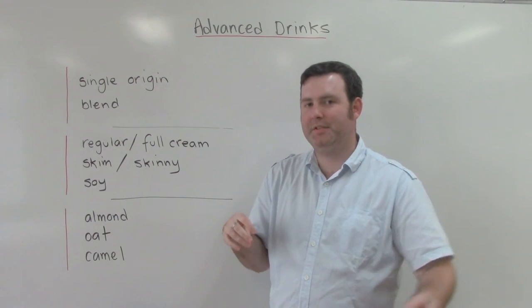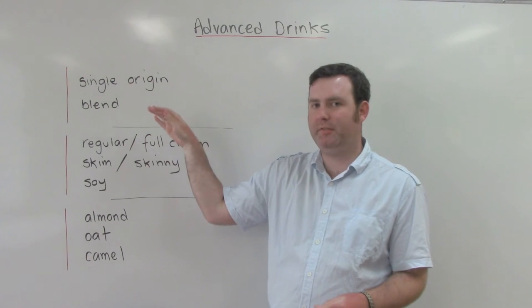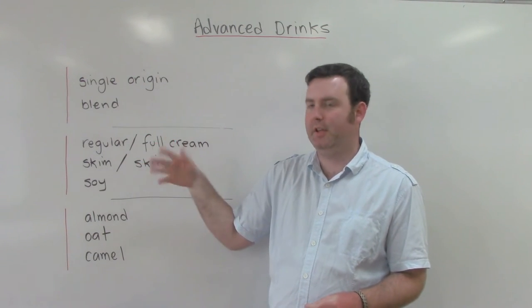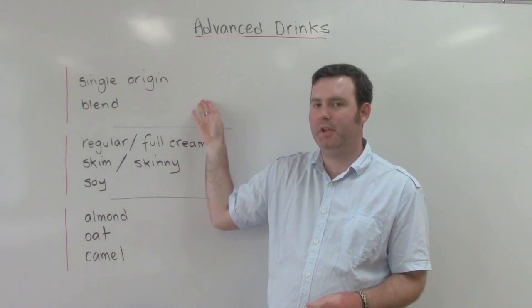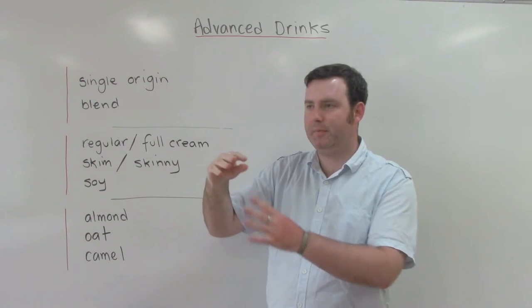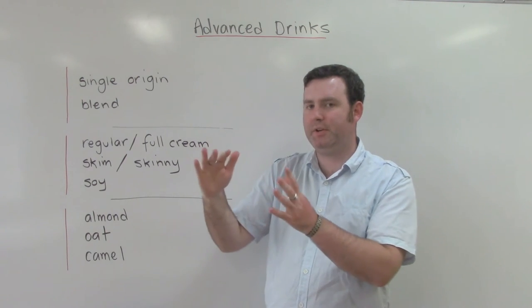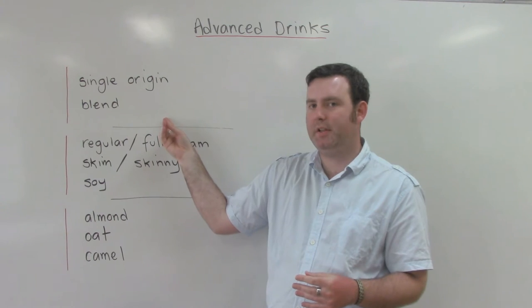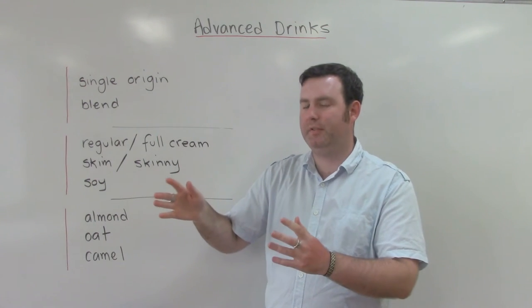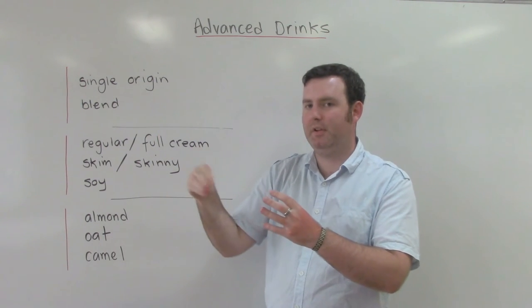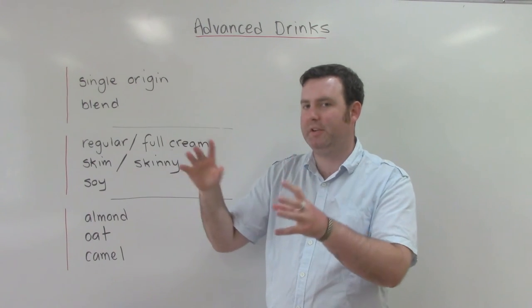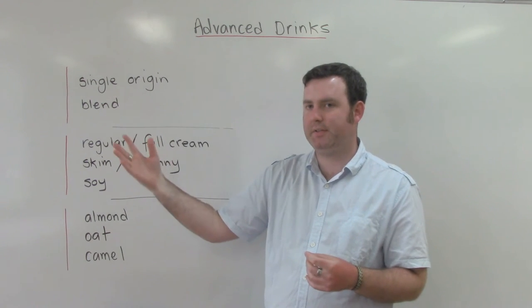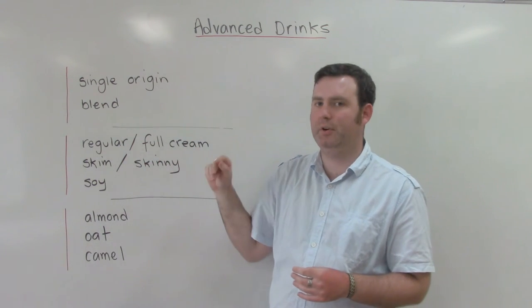Now, the last thing I'm going to tell you is about the different types of coffee and different types of milk you can find in a cafe. Starting with single origin. So this coffee is from the same area of a country or the same country. The blend is a mixture of coffee from different parts of a country or different countries. Normally, a blend is what you get in a coffee in cafes, unless you ask for single origin.